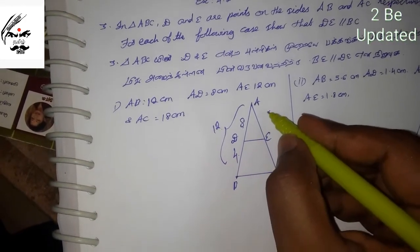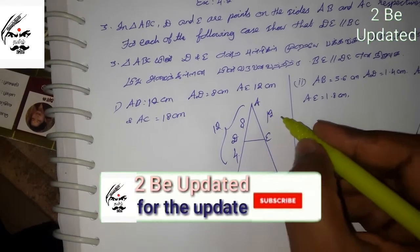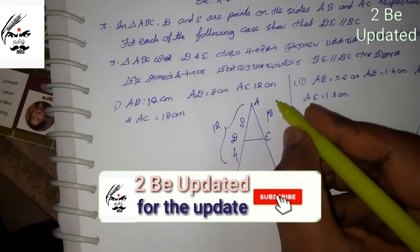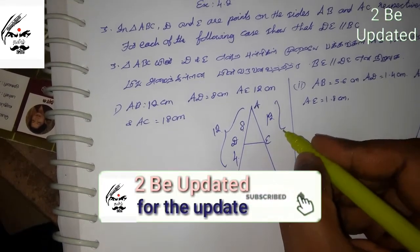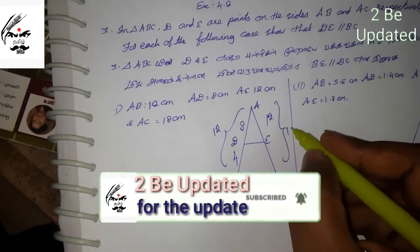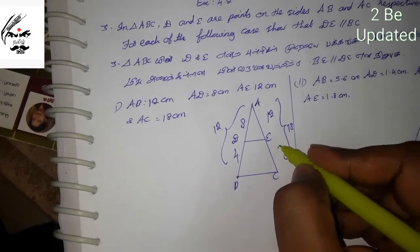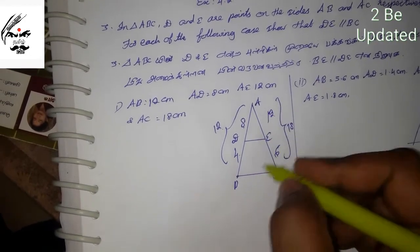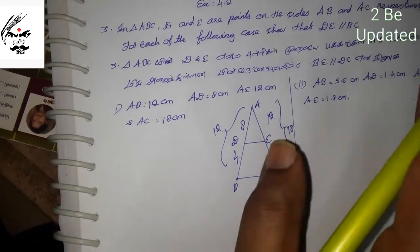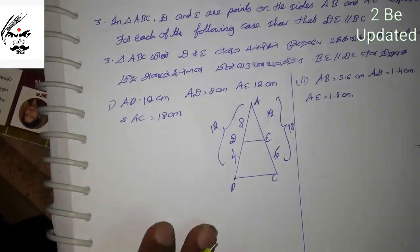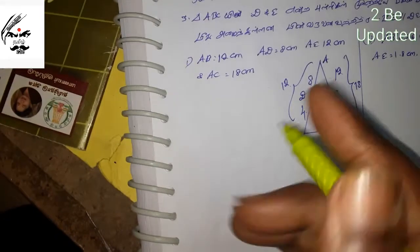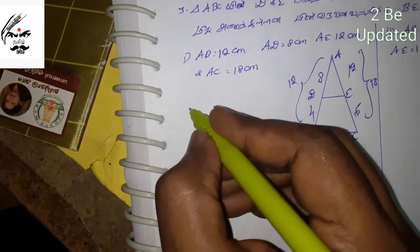So AE is 18cm. The whole AC is 18cm. So this whole is 18cm. So this is the value. You can also get the value of this — the value will be provided for you.